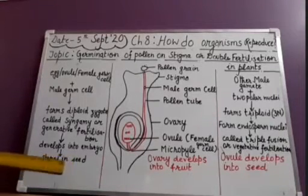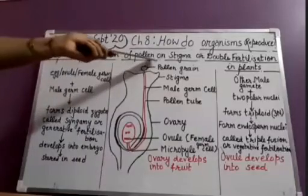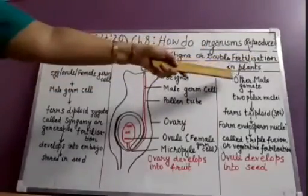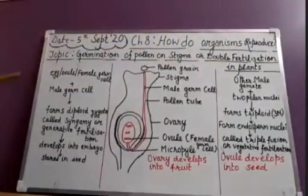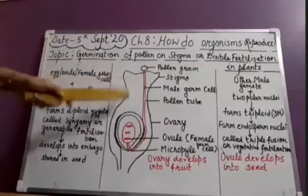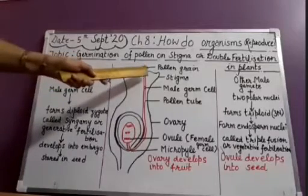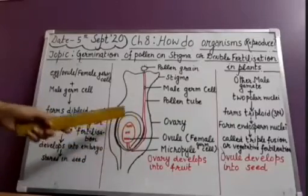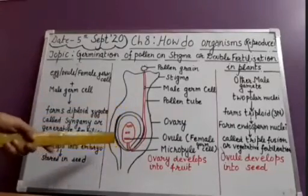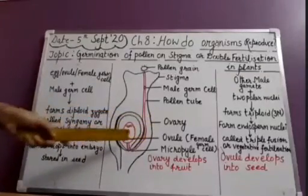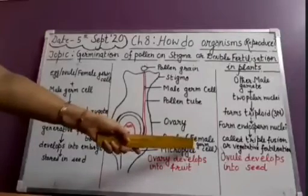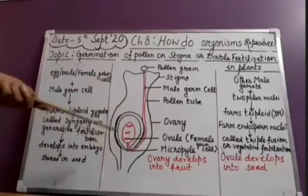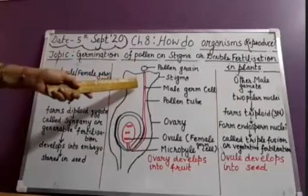Today we will study about germination of pollen grain on stigma and double fertilization in plants — a very important topic from the board exam point of view. Pollen is the male germ cell and the female germ cells are present in the ovary of the plant. In the flower's ovary there are ovules, which are the female germ cells. When due to pollination, using any pollinating agent, pollen grains get stuck on the stigma.